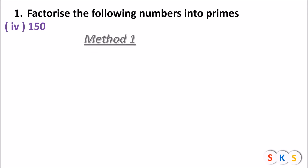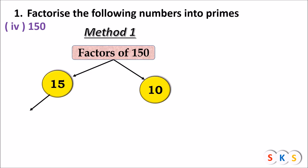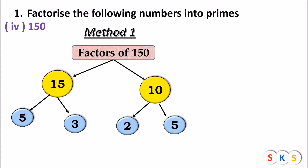Question number 4: 150. Method 1: We take two numbers whose product is 150, like 10 × 15 = 150. But 15 and 10 are not prime. We factorize 15 further: 15 = 3 × 5. We factorize 10 further: 10 = 2 × 5. All lower circles now contain prime numbers, so the prime factors of 150 = 5 × 3 × 2 × 5.